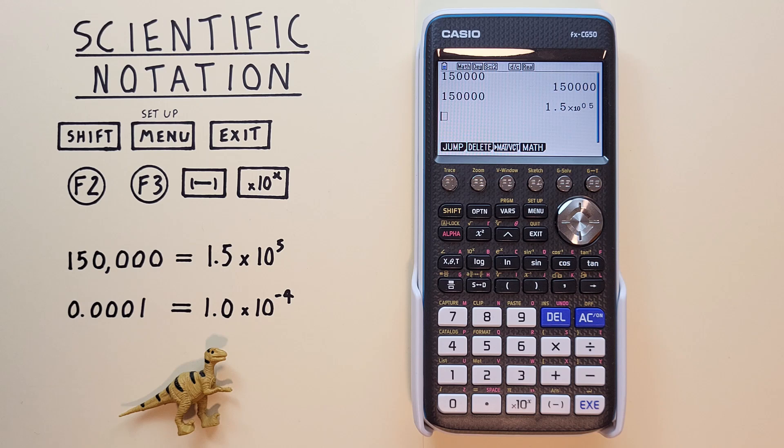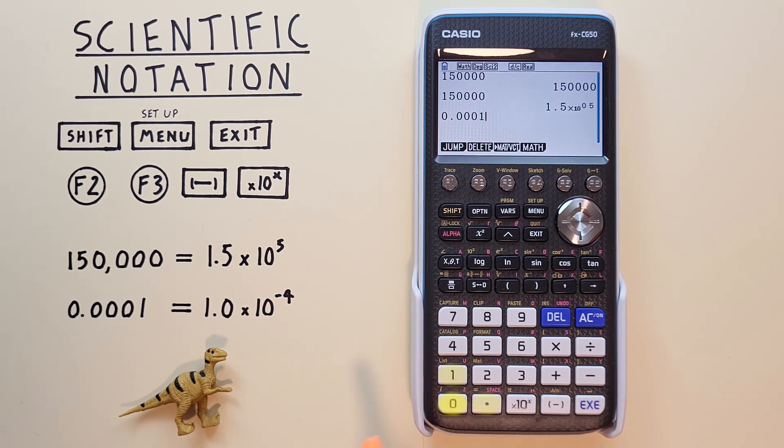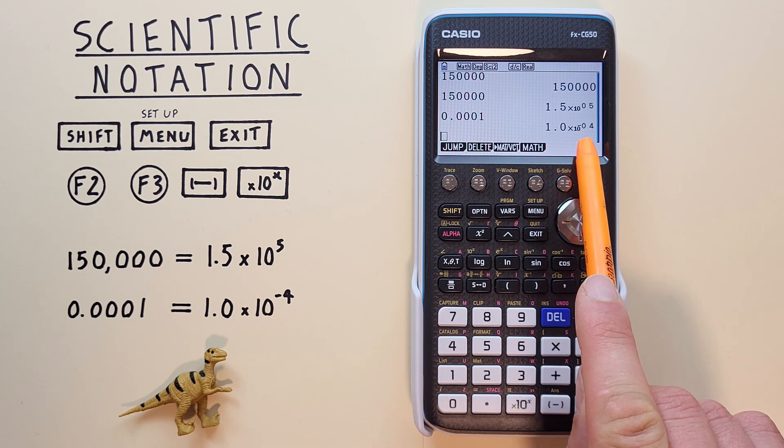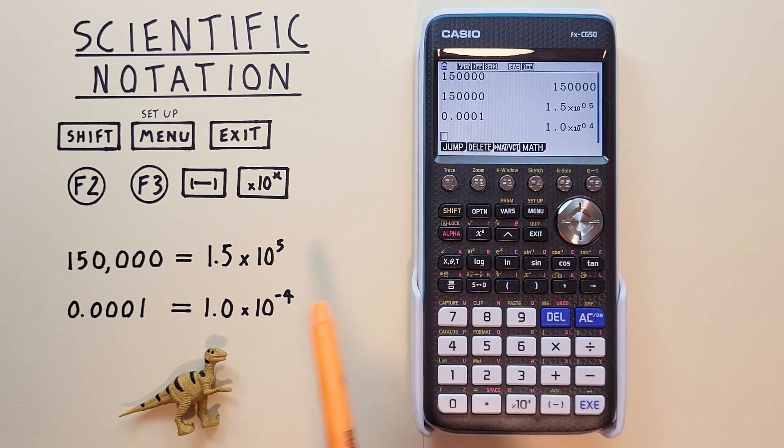This also works with really small numbers. For example, if we add 0.0001 and we wanted that in scientific notation, now that we're already in scientific notation mode, we can just enter 0.0001, hit EXE, and see that it converts to 1.0 times 10 to the power of negative 4, which is correct.